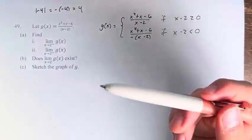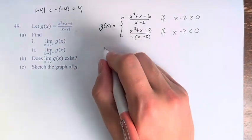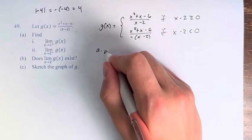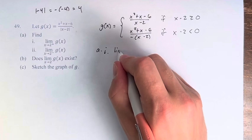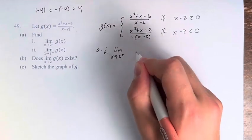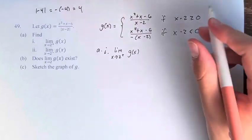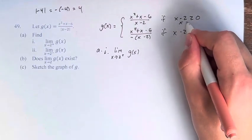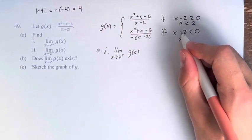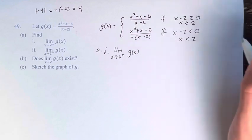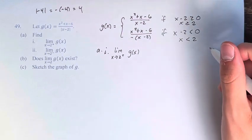So now we can find the limit as x approaches 2. In part A, for part 1, we have the limit as x approaches 2 from the right of g of x. I should specify here, x minus 2 is greater than or equal to 0, that means x is greater than or equal to 2. x minus 2 is less than 0, that means x is less than 2, just to solve these inequalities.